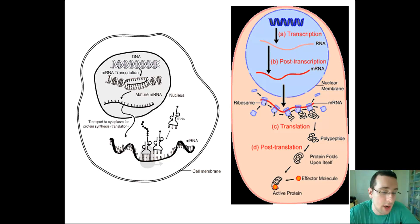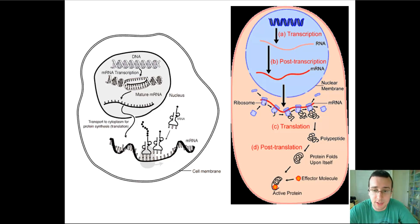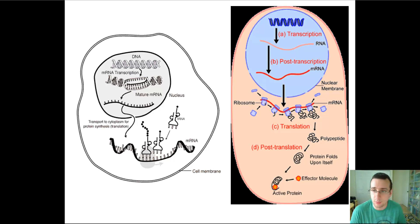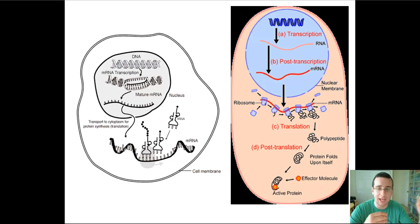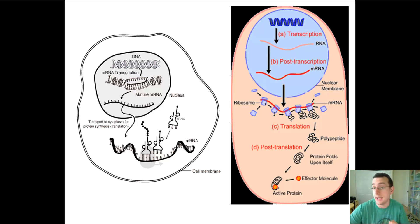Especially in eukaryotes, after translation is completed, you still have post-translational modification of proteins, which involves a lot of things. So these are the stages of the protein synthesis process, which happens from the nucleus to the cytoplasm and beyond. The actors of this process are going to be the DNA, which needs to be transcribed, and the messenger RNA.